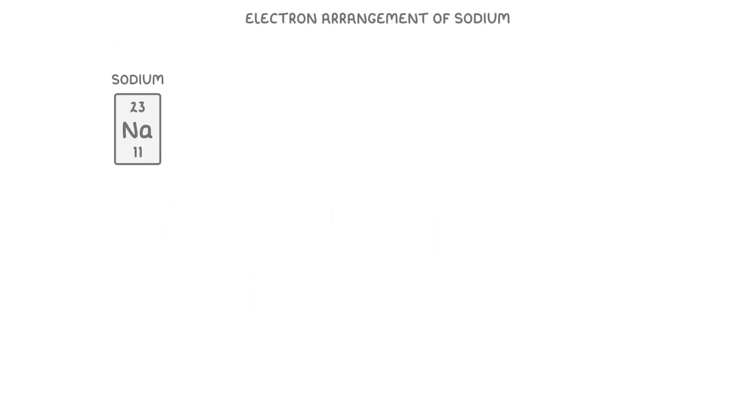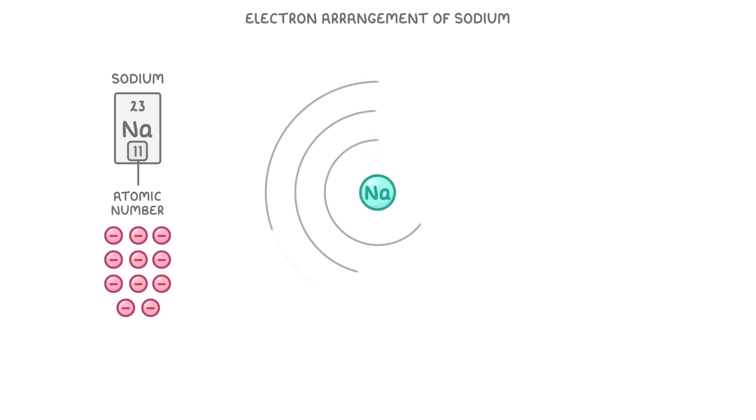Let's start by drawing the electron arrangement of sodium. The fact that it has an atomic number of 11 tells us that it has 11 protons, but also that it has 11 electrons. These electrons are going to be arranged in shells around the nucleus, which we draw as rings like this.